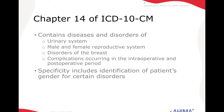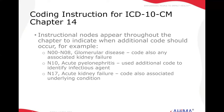There's specificity that includes identification of the patient's gender for certain disorders. You'll see a few instructional notes that appear throughout the chapter to indicate when an additional code should occur. For example, N00 through N08, glomerular disease — you would also code any associated kidney failure.